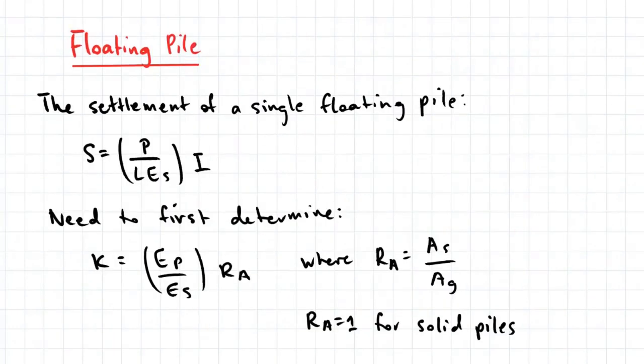The settlement of a single floating pile is given by this following expression, where P is the applied load to the pile, L is the length of the pile, ES is the modulus of the soil, and we also have an influence factor I, which accounts for the properties of the pile.